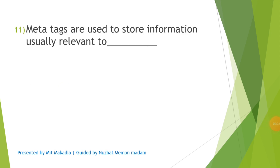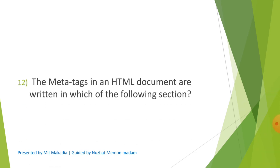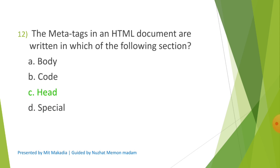Question 11: Meta tags are used to store information usually relevant to what? Options are A) Browser, B) Search engine, C) Both A and B, D) None of these. The correct answer is C) Both A and B. Question 12: The meta tag in an HTML document is written in which of the following sections? Options are A) Body, B) Code, C) Head, D) Spatial. The correct answer is C) Head.